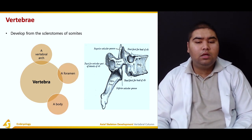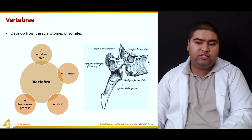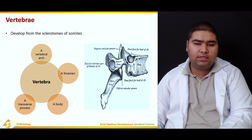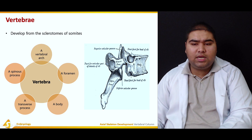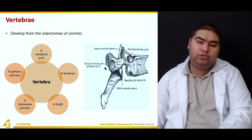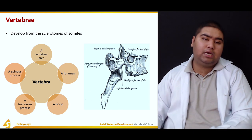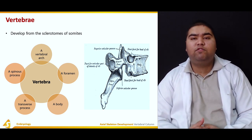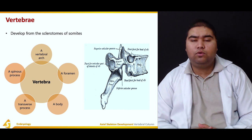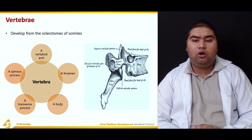The vertebra has a vertebral arch, a foramen, a body, a transverse process, and a spinous process. The foramen usually lies in here — I cannot show you from this picture. You must have seen a vertebra in your anatomy lab; if not, go get a vertebra and try to make out these parts on it.